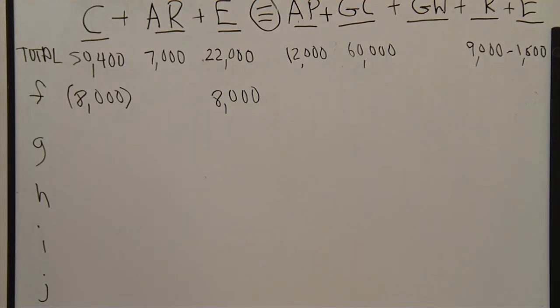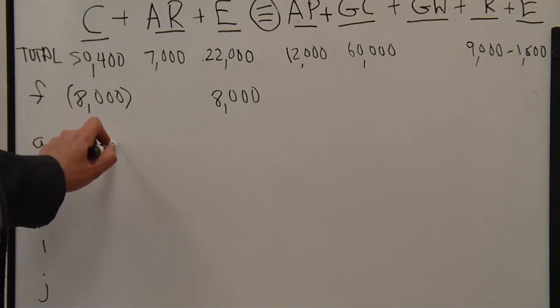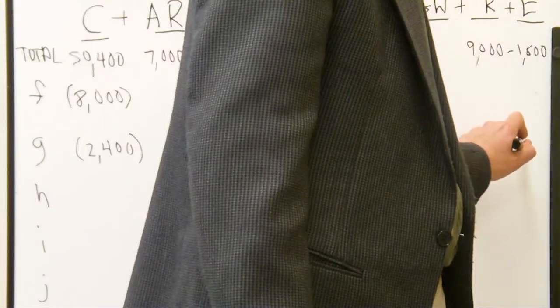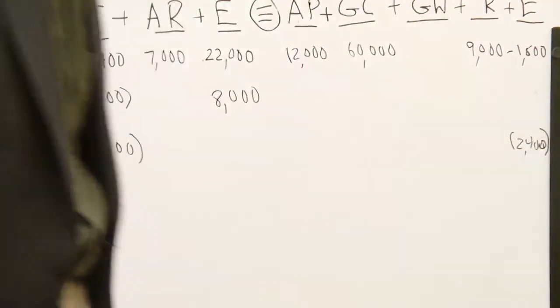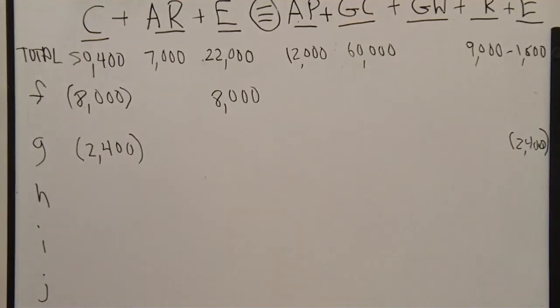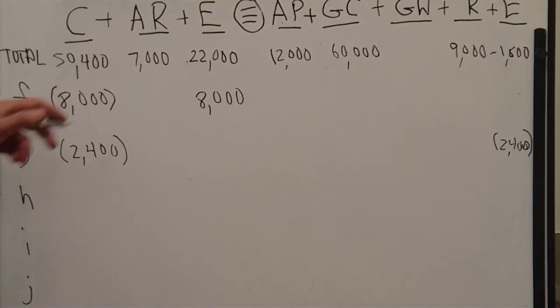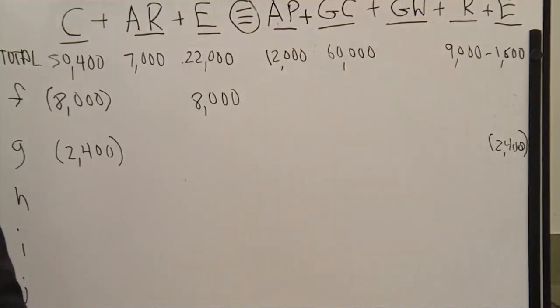Transaction G, the company pays its office assistant. They pay the office assistant $2,400 cash for the month. We have cash going down on the left side. And we have capital going down or equity going down through a minus $2,400 on the right side.